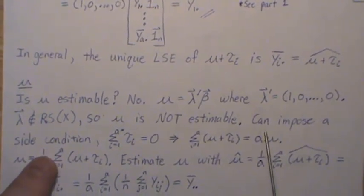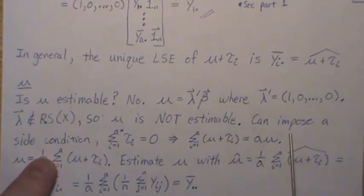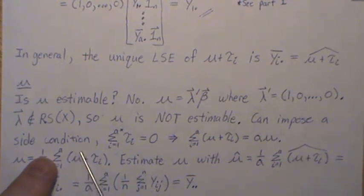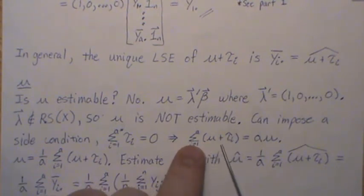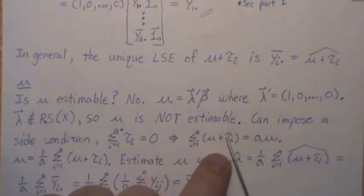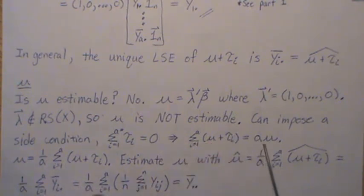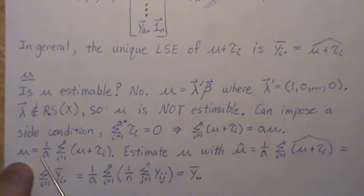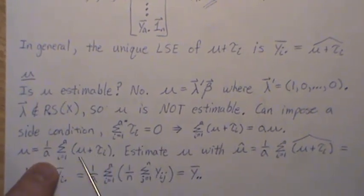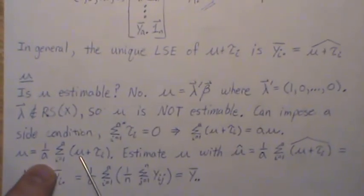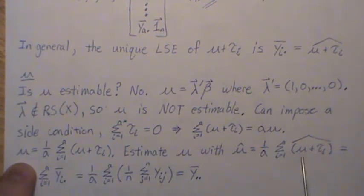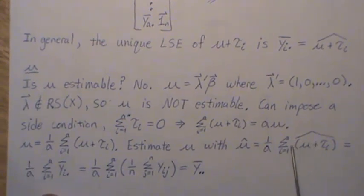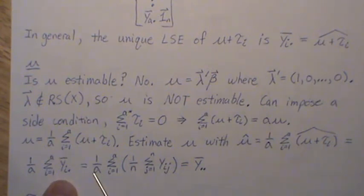But some very smart person created, you know, if you impose a side condition where the sum of the τᵢ's equals 0, which implies that if we look at this sum, when you take the sum, this goes to 0, and there's A of those, we get Aμ. Now, divide both sides by A, and we get μ equals this. But μ + τᵢ's are estimable. So we would estimate μ with this, the ith treatment, the sum of the ith treatment effect.